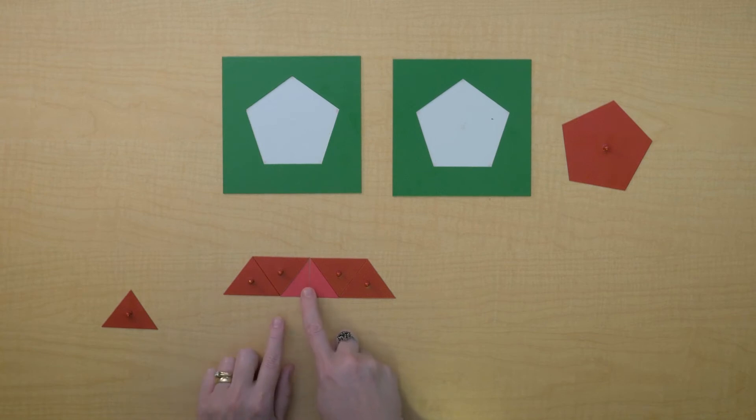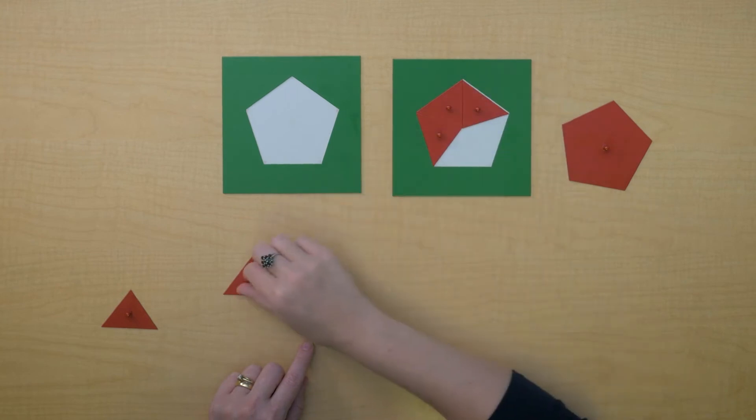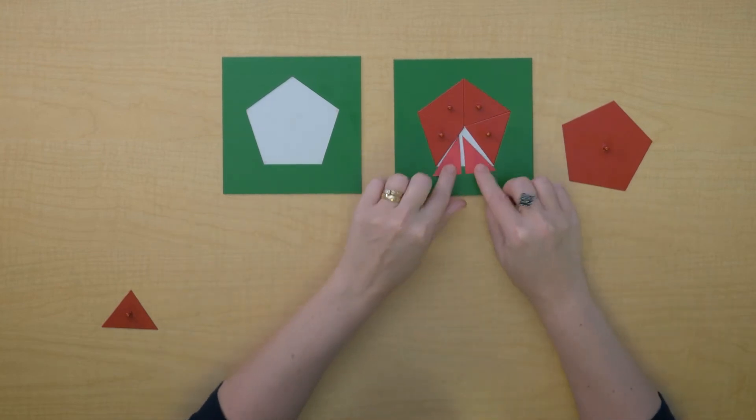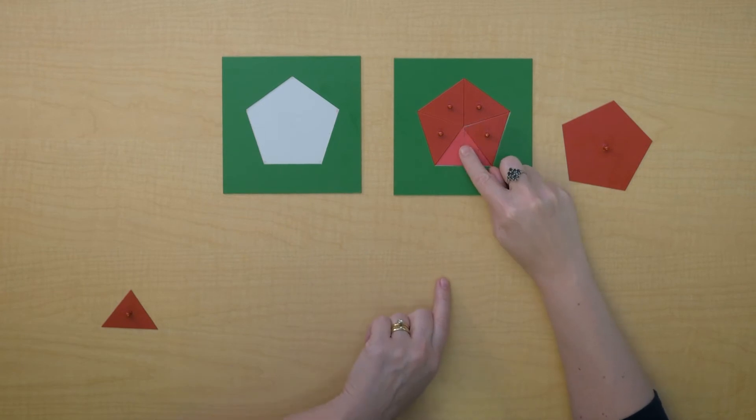So we can see the height of the trapezoid right here. So let's look carefully when we put these pieces back to see what that height is in terms of the pentagon. Look at that. The height of the trapezoid is the apothem.